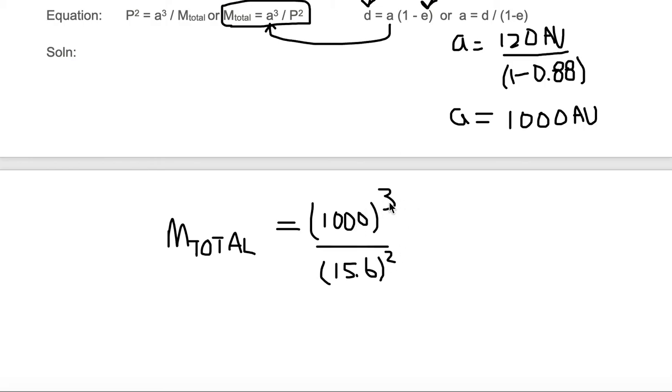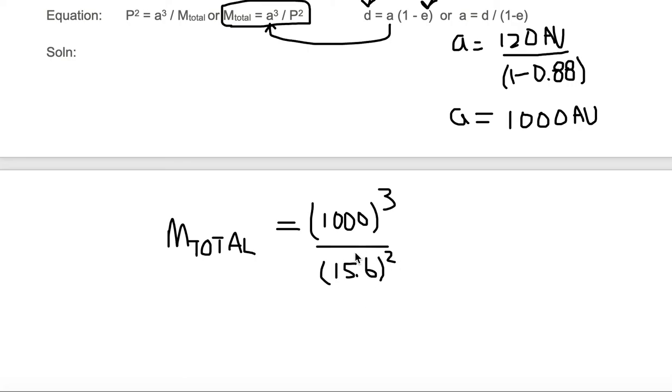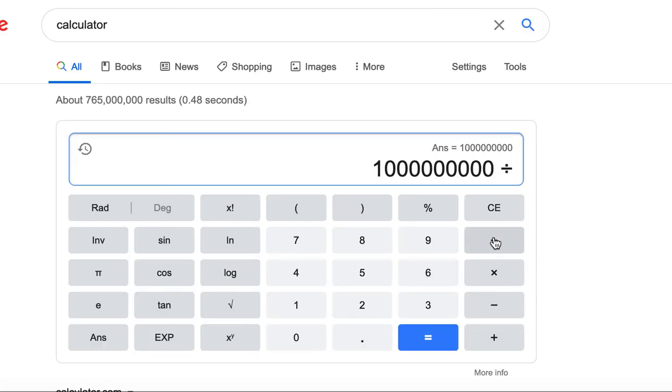So we need to take 1,000 cubed. Let's do that part first. We have 1,000 X to the Y cubed, hit equals. And now the next thing we want to do is divide by 15.6 squared. So we divide by parentheses 15.6 X to the Y squared, close it, and that equals 4,109,138.